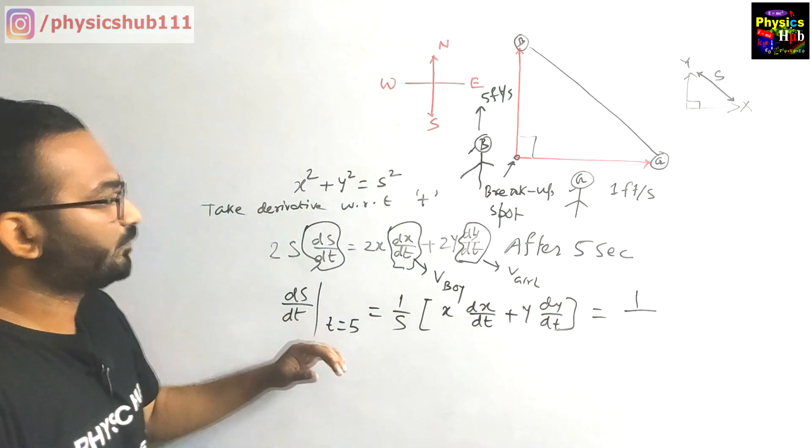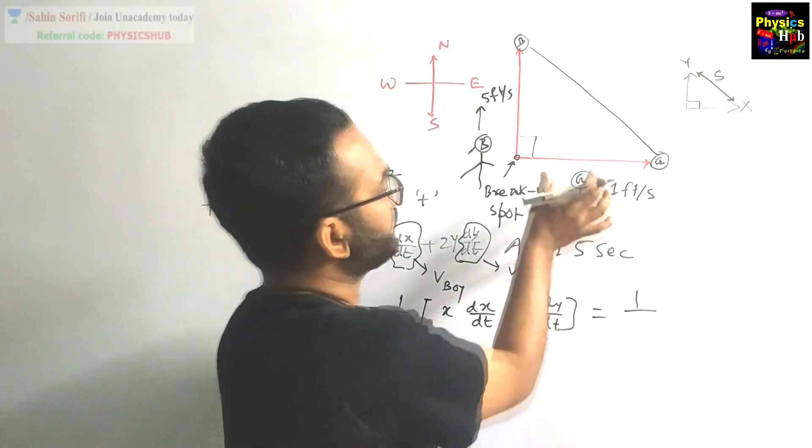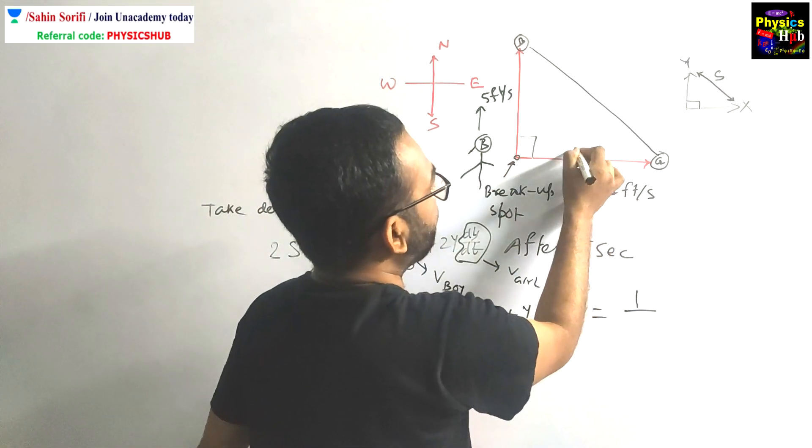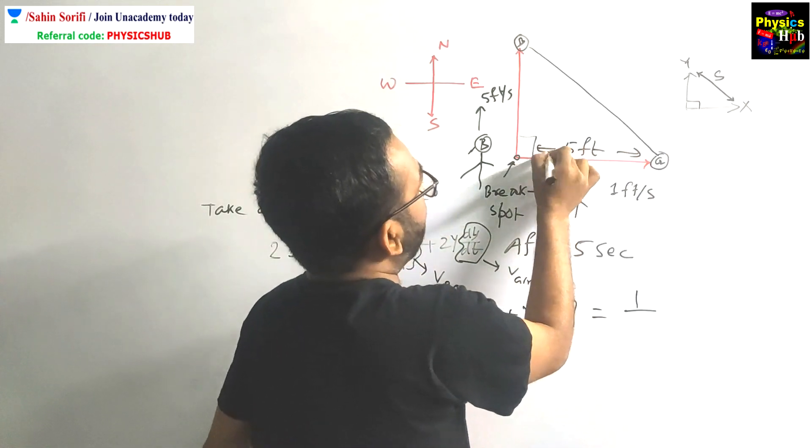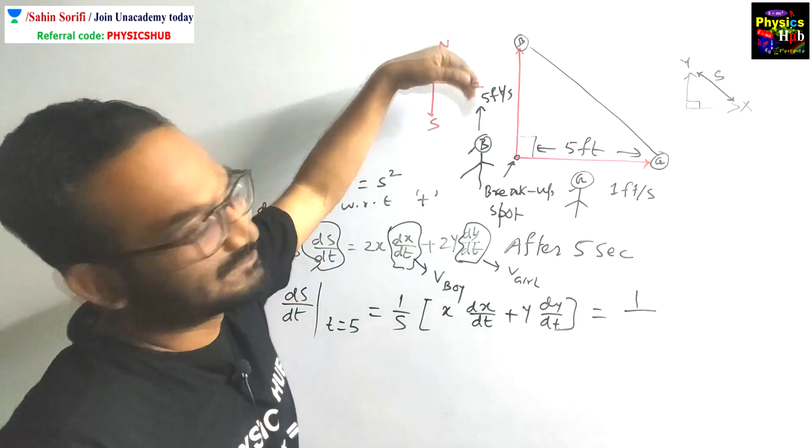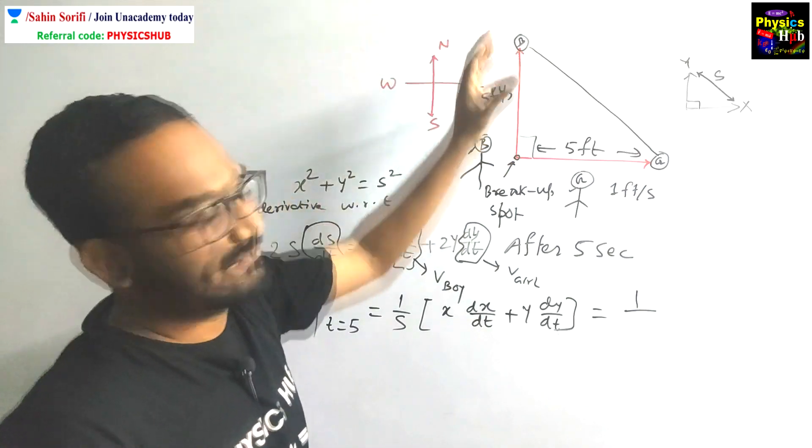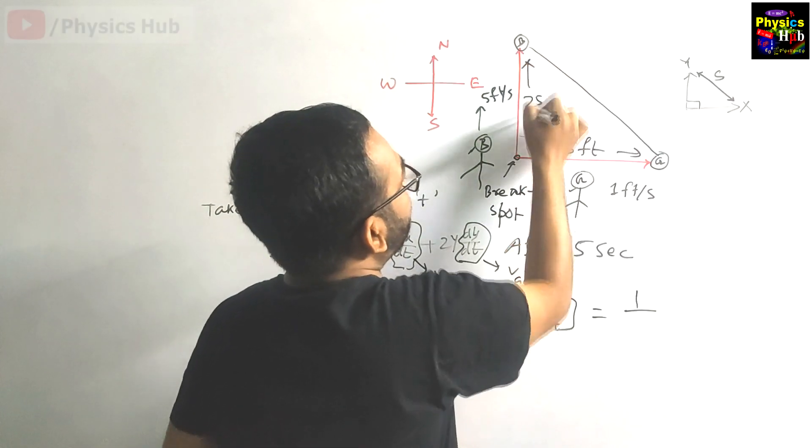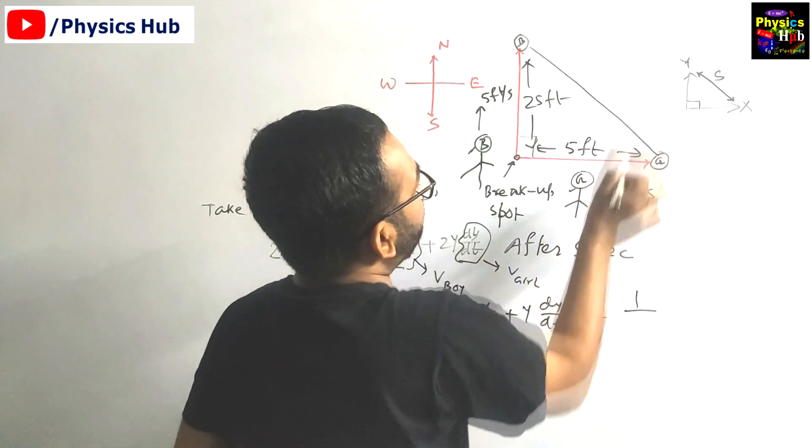After 5 seconds, how much distance have they traveled? The girl is going with 1 foot per second, so after 5 seconds this will be 5 feet. He is moving with 5 feet per second, moving much faster. So 5 × 5 = 25 meters, or sorry, feet.